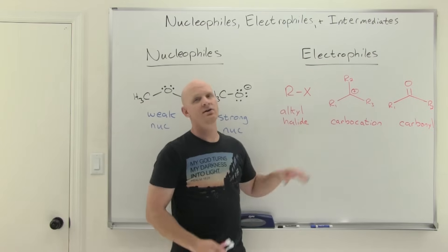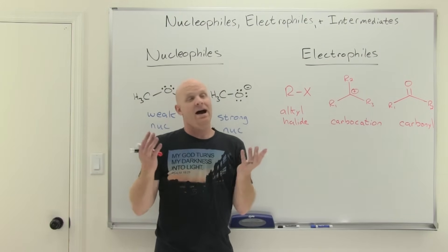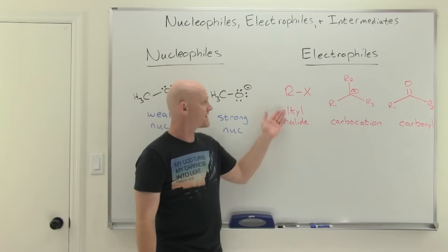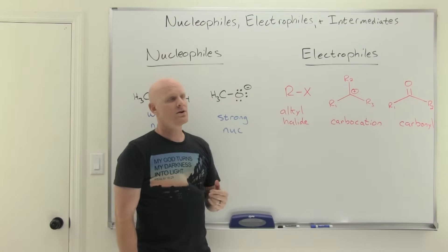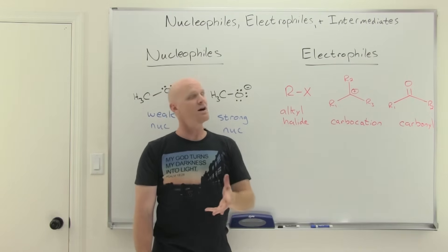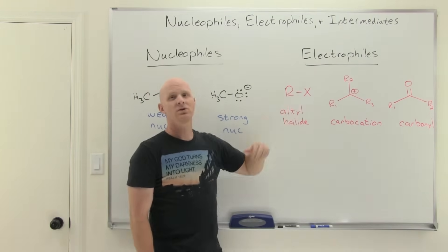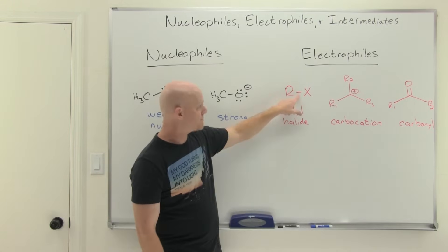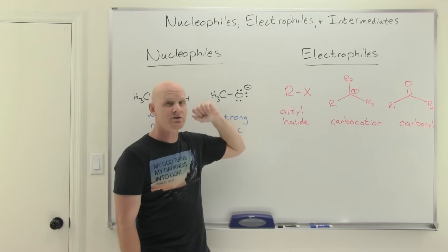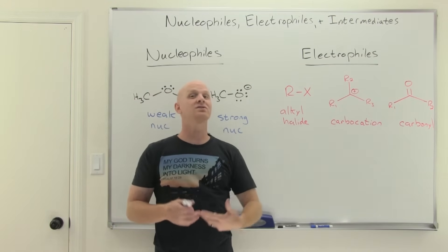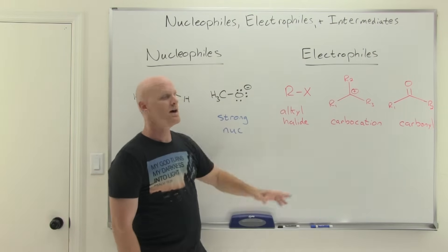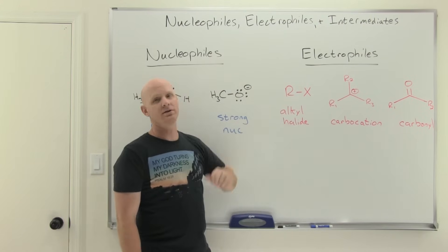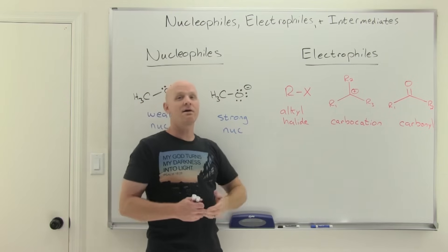Now let's look at three very common electrophiles. The first is an alkyl halide. The halide is typically chlorine, bromine, or iodine — not usually fluorine. Chlorine, bromine, and iodine, being conjugate bases of strong acids, are very stable as ions on their own. They can break off so something else can form a bond to the electrophilic carbon. That's what makes an alkyl halide a good electrophile — the halogen can leave, making room for a nucleophile to bond.